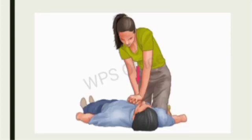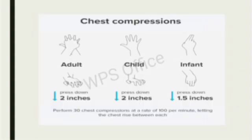When exactly do we start CPR? When the victim is unresponsive, is not breathing, and does not have a pulse, we start giving CPR. In adults, we give one breath every 5 to 6 seconds, which means about 10 to 12 breaths per minute. In case of infants and children, we give one breath every 3 to 5 seconds, which means 15 to 20 breaths per minute. Each breath should be given in 1 second and should make the chest rise. We check the pulse about every 2 minutes.